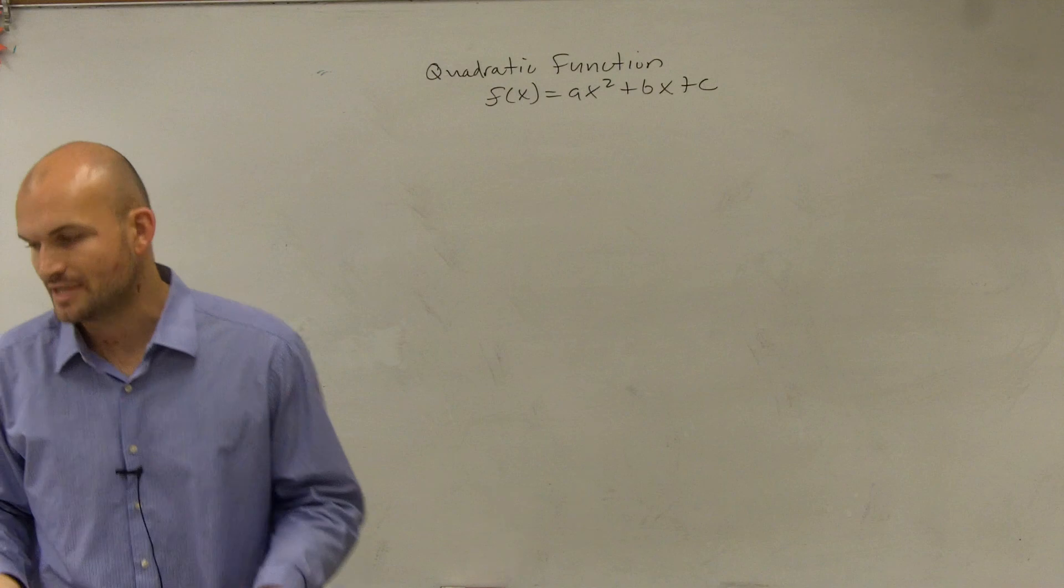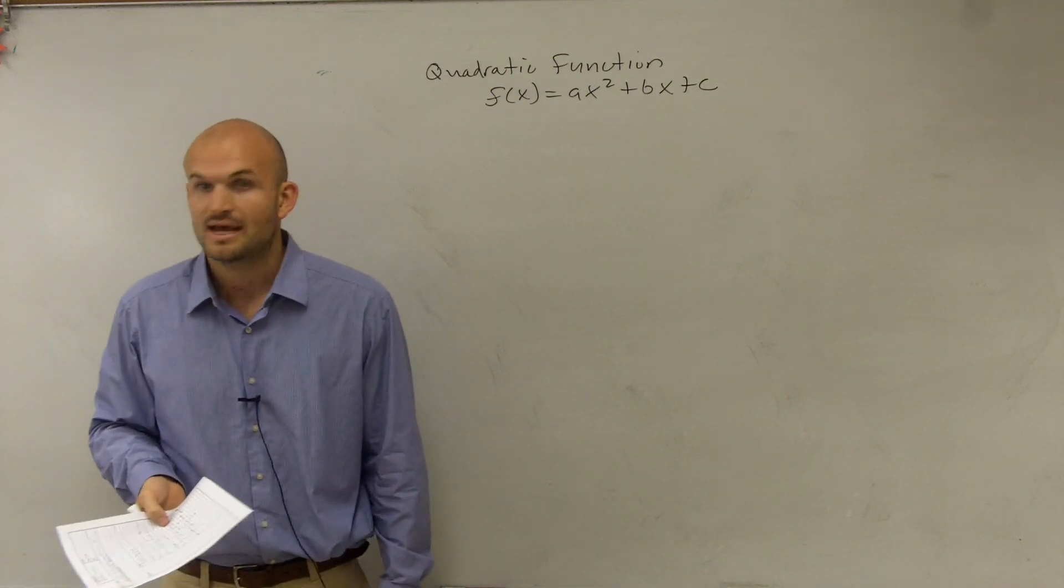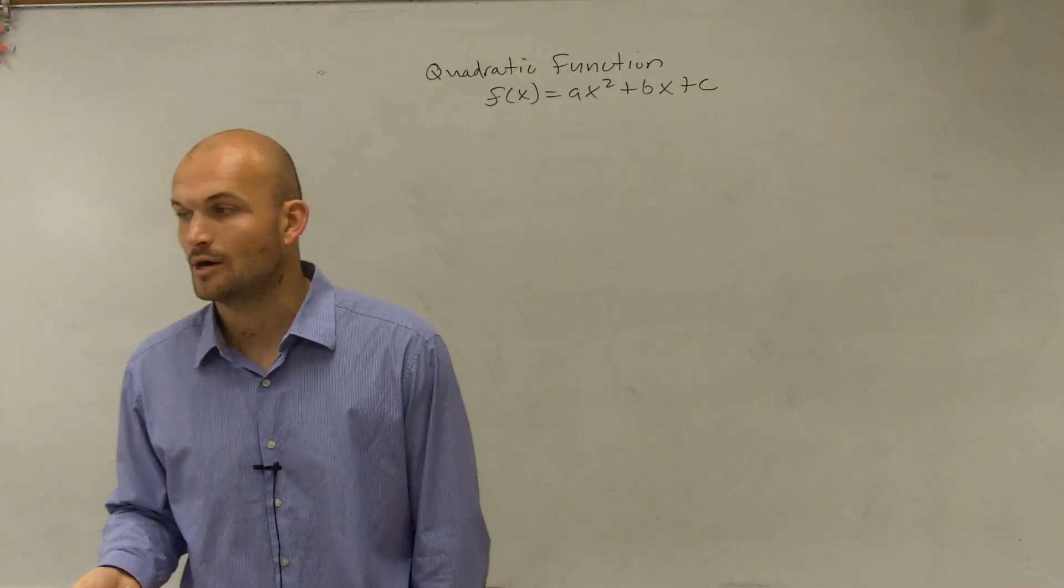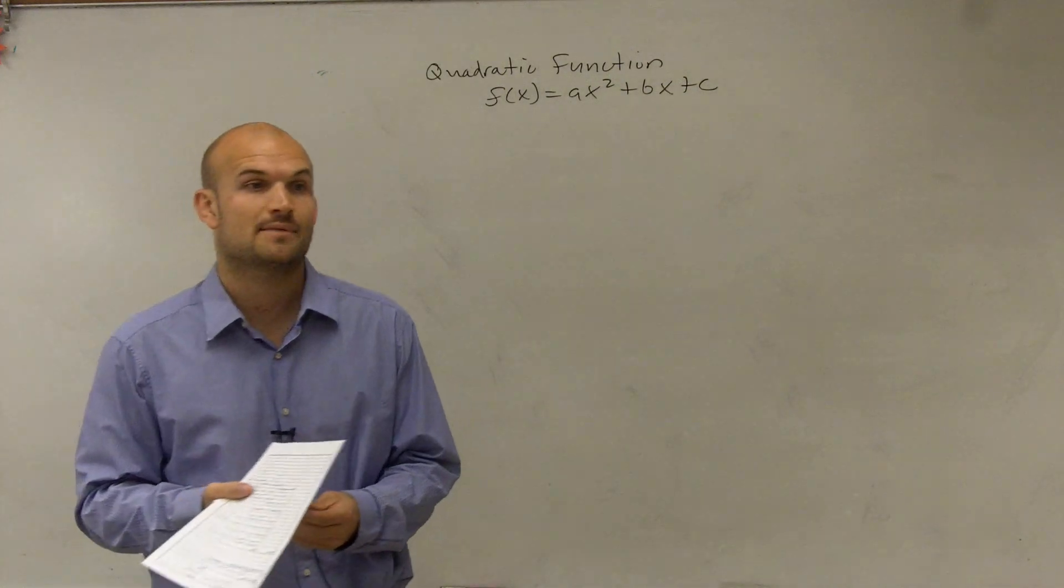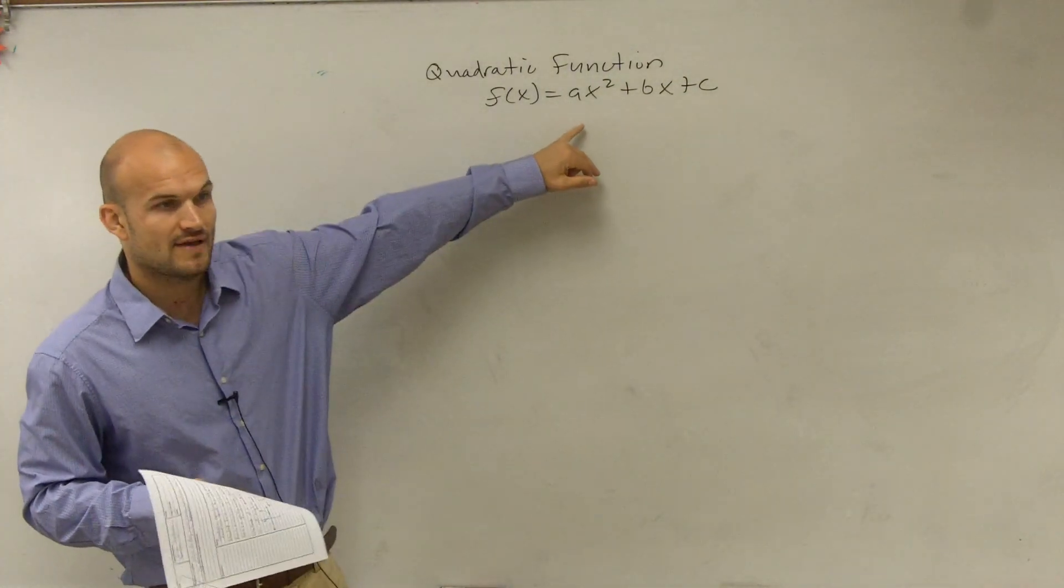Now, I'm not going to write it down because you guys already have this in your notes, but remember, a, b, and c were real numbers, and a could not equal zero. Now, from this, we were able to learn a couple things. We were able to learn if we had a maximum or a minimum value, depending on what the value of a was.